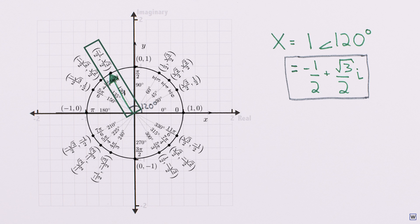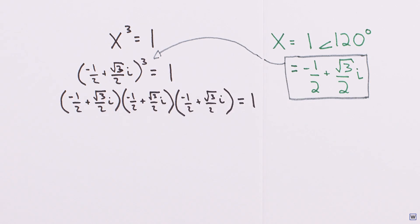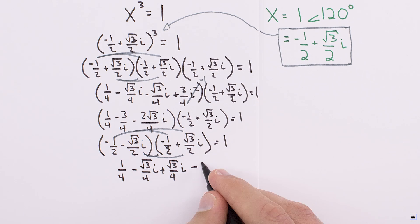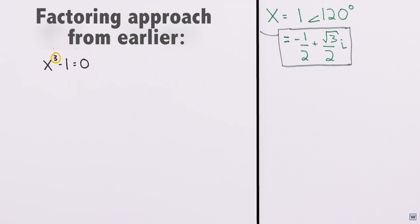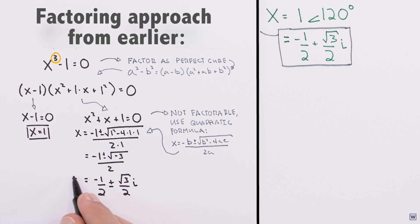So now that we have an answer in rectangular form, let's try it. If we multiply out our result, we get 1. Pretty cool, right? We were able to solve a tough algebra problem visually using the complex plane, and get the same exact answer we obtained earlier through factoring.